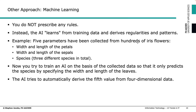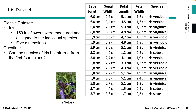The approach with sub-symbolic AI is for example done with machine learning. Machine learning means you do not prescribe any rules. Instead, you have training data which is fed into special algorithms, and these algorithms then derive regularities and patterns by themselves. An easy example: we have collected data from hundreds of iris flowers — the width and length of the petals, and the width and length of the sepals. You try to train an artificial intelligence on the basis of the collected data so that it predicts the species by specifying only the width and length of the leaves.